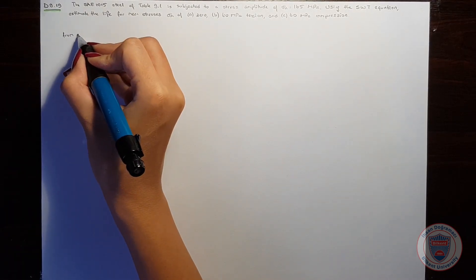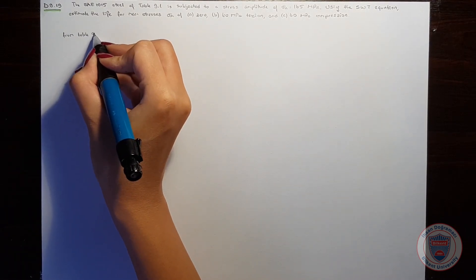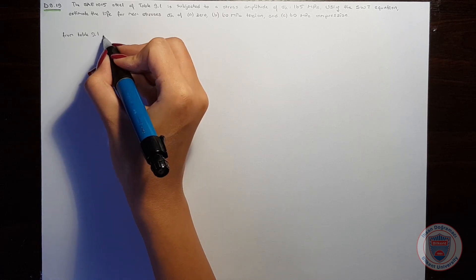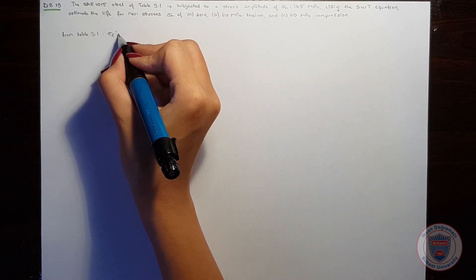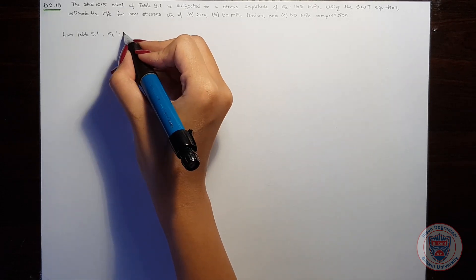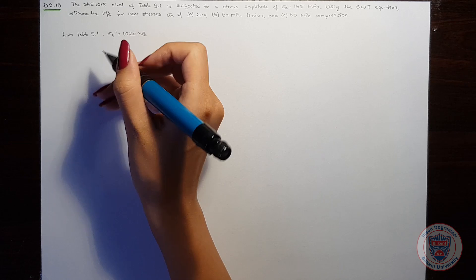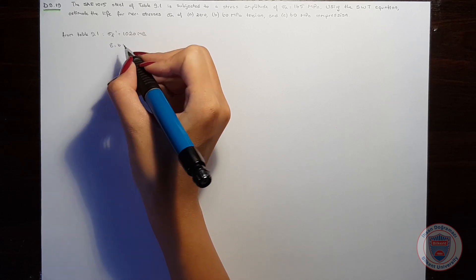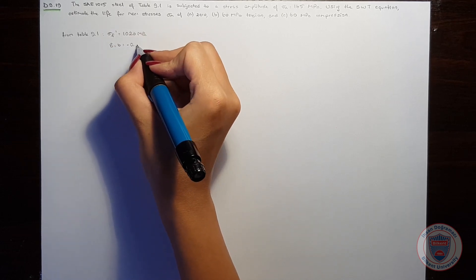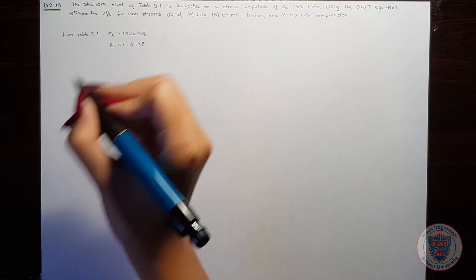This problem is very similar to D 9.18 but now instead of using the Merrow equation, we will use SWT. From table 9.1, we know that sigma F prime is equal to 1020 MPa and B is equal to minus 0.138.